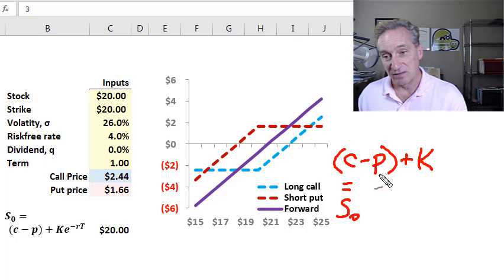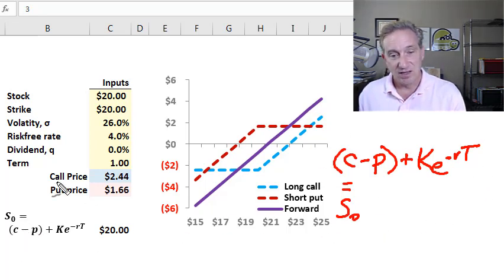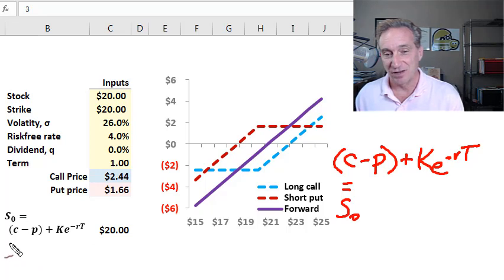By adding the future strike price that we will pay under any scenario, we've synthesized the stock position. Buy the call, write the put synthetic forward, but add cash equal to strike and we synthesized the stock. This is the elegant approach to put call parity. These three equal S0. My stock today is present value, my call is present value, my put value is present value. So I want to present value that strike price with e to the negative rT. The price of the stock equals its synthetic equivalent: buying the call, writing the put, and present value of cash to be paid in the form of the strike price.